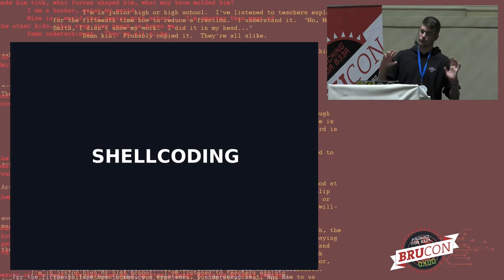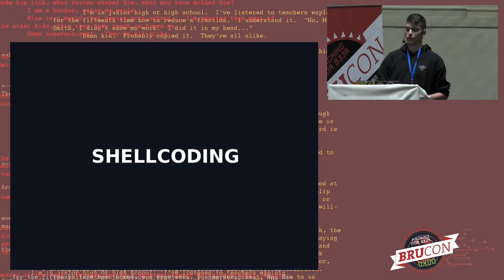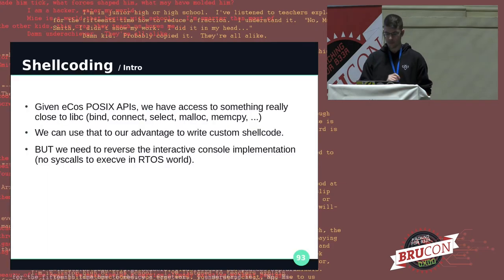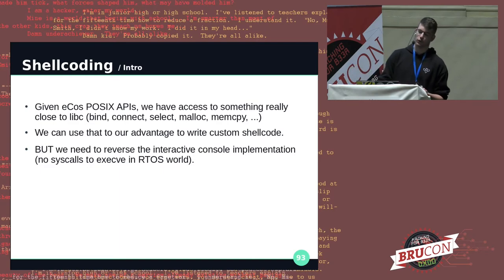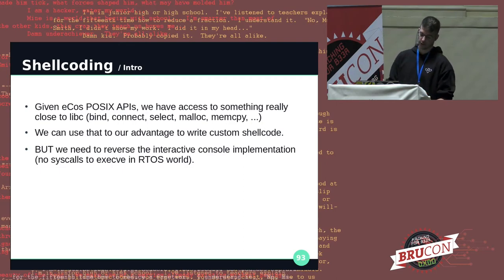Speaking of shellcode — shellcode is the art of building binary code for a custom target that will execute a specific action. Usually it's malicious code. In our case, we want this code to establish a reverse shell to a C2. Given ECOS POSIX APIs, we have access to something really close to libc — bind, connect, select, malloc, memcpy — all functions identified using the function ID database I demonstrated earlier.